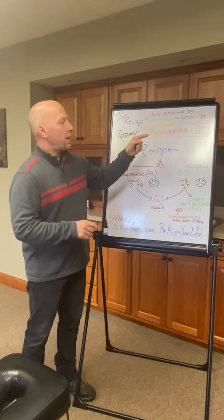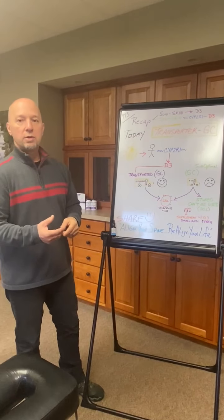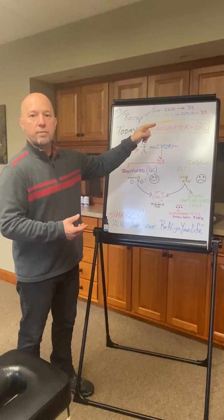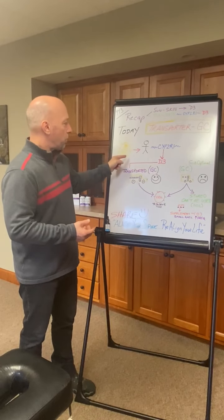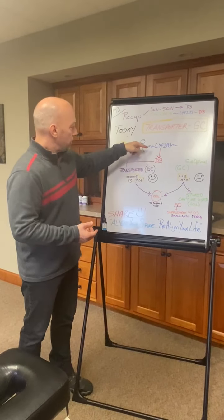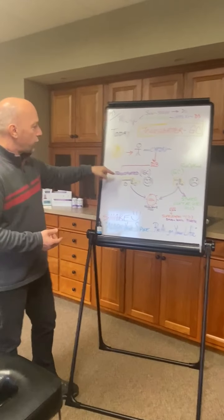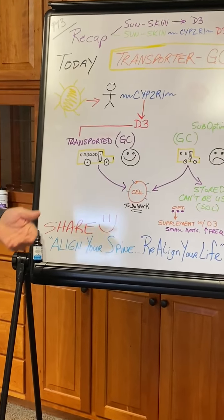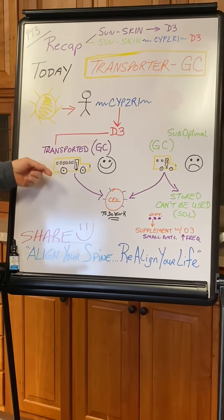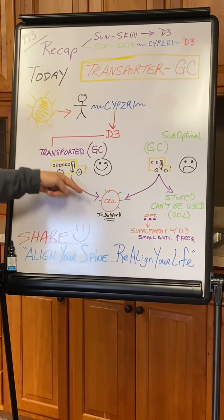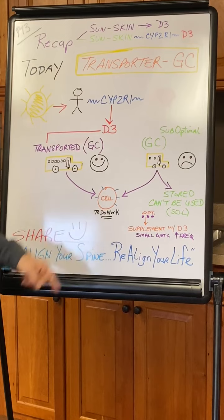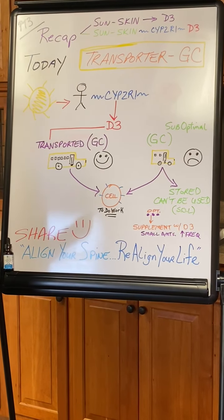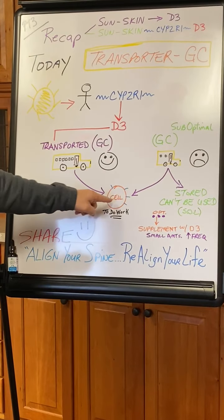But today we're going to talk about the transporter gene, the GC gene. After the body has converted the D2 to D3, it has to be transported. We're going to think about it as a school bus — D3 hops on the bus, and that bus carries the D3 to the cell.